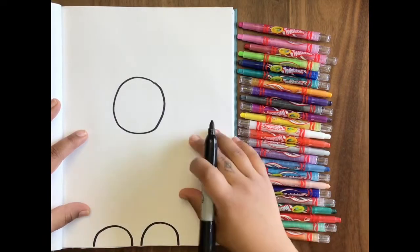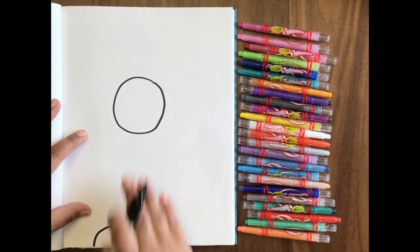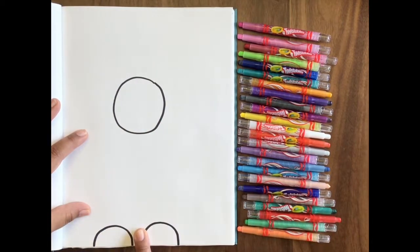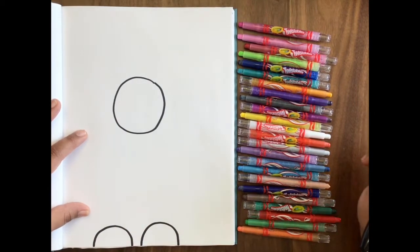Just like that. So they should be pretty close. If you take your finger from your circle down, they should be right in the middle. Alright, two half circles.